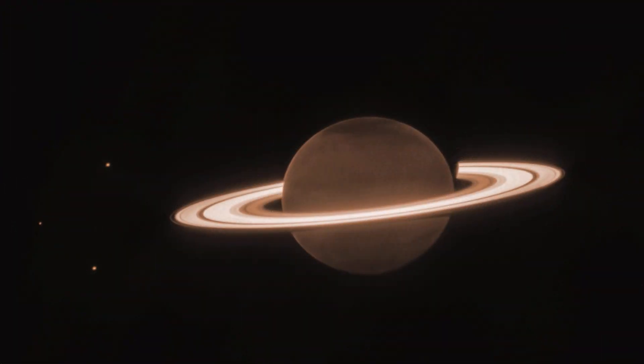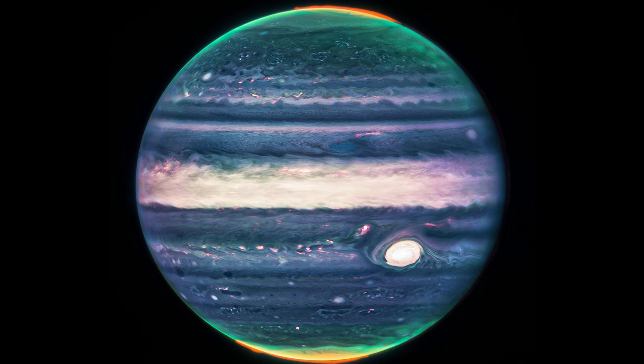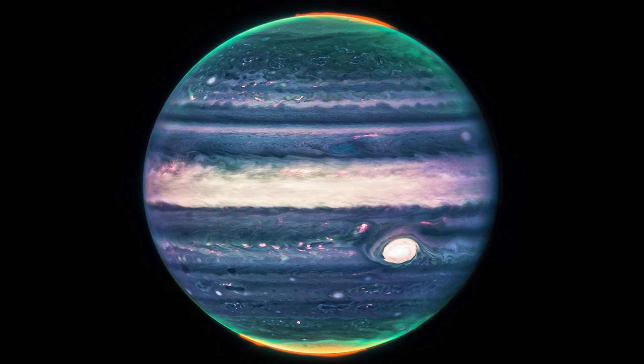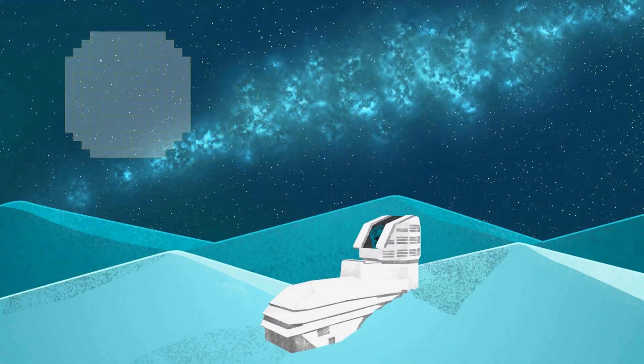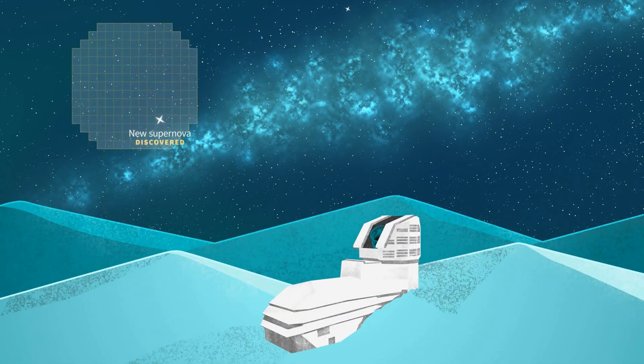In our own solar system, Webb imaged planets and rings, like capturing Jupiter's infrared auroras. Both will tackle dark matter and dark energy, but from different angles.